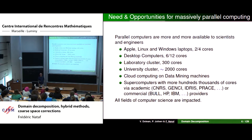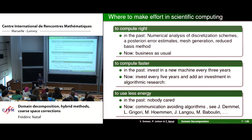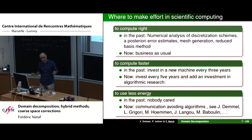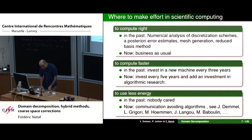The big issue now is to take advantage of this hardware by devising good parallel methods and software. The first priority is to compute correctly — having good numerical schemes, good discretization, convergence proofs, and a posteriori error estimates. These things are still absolutely necessary and research in this area is still very active.